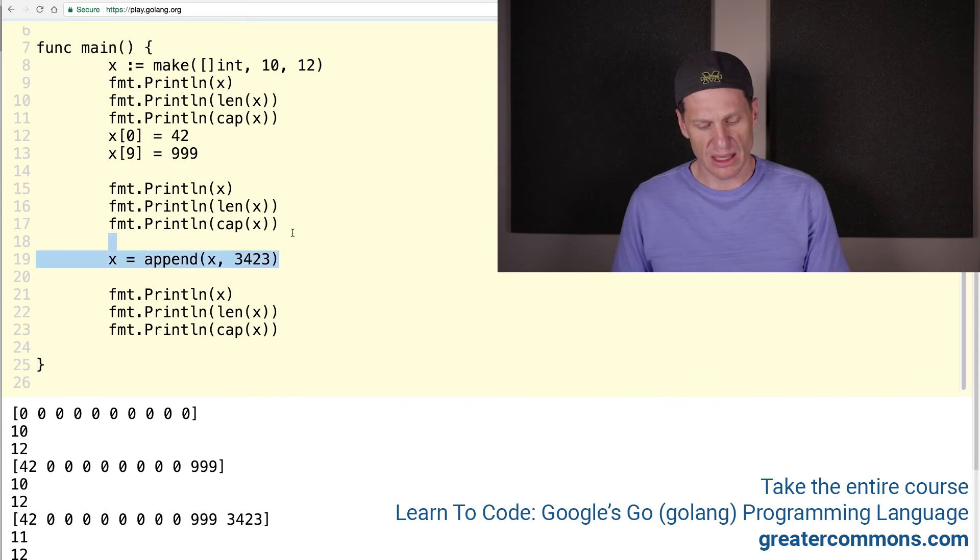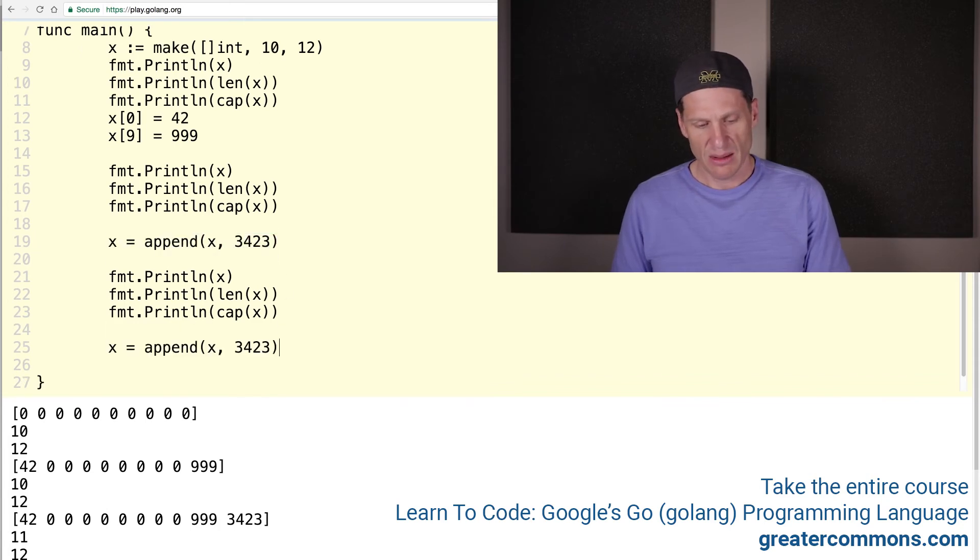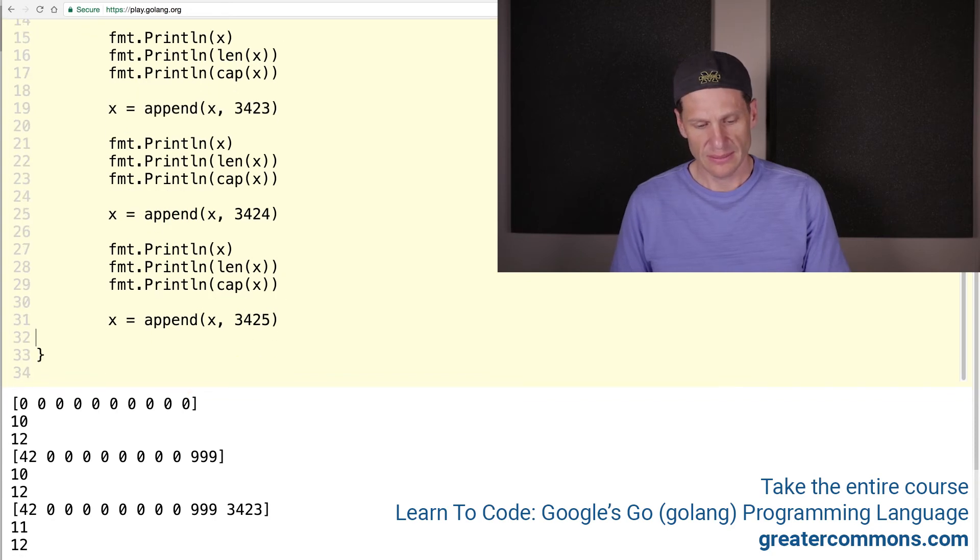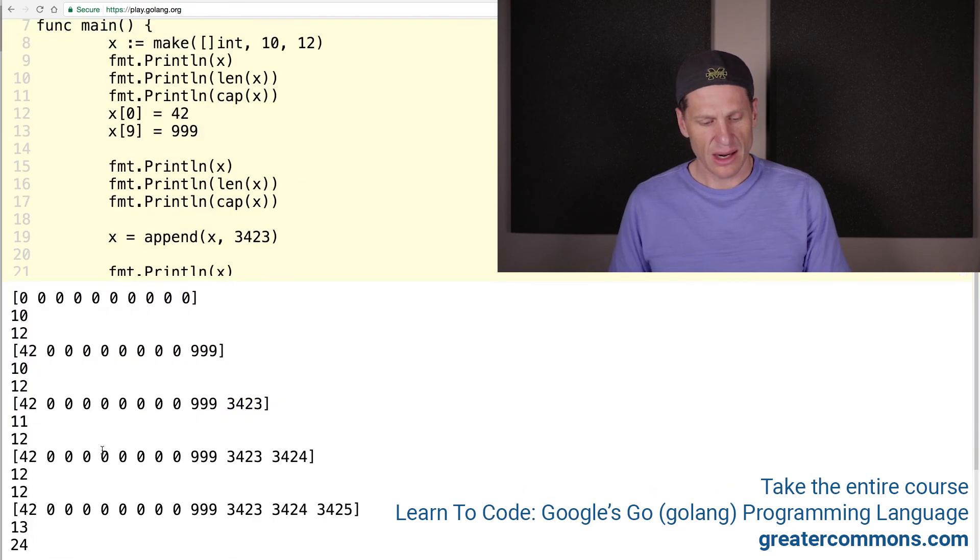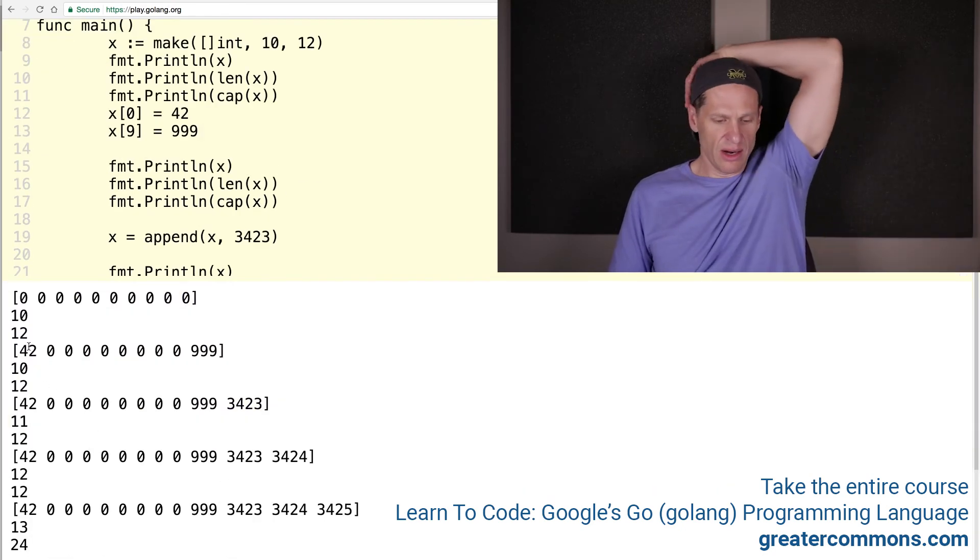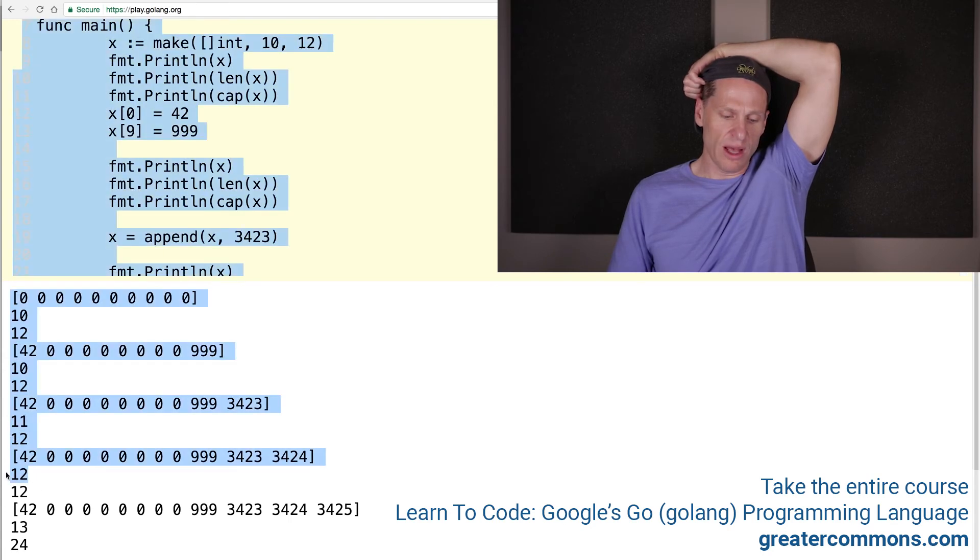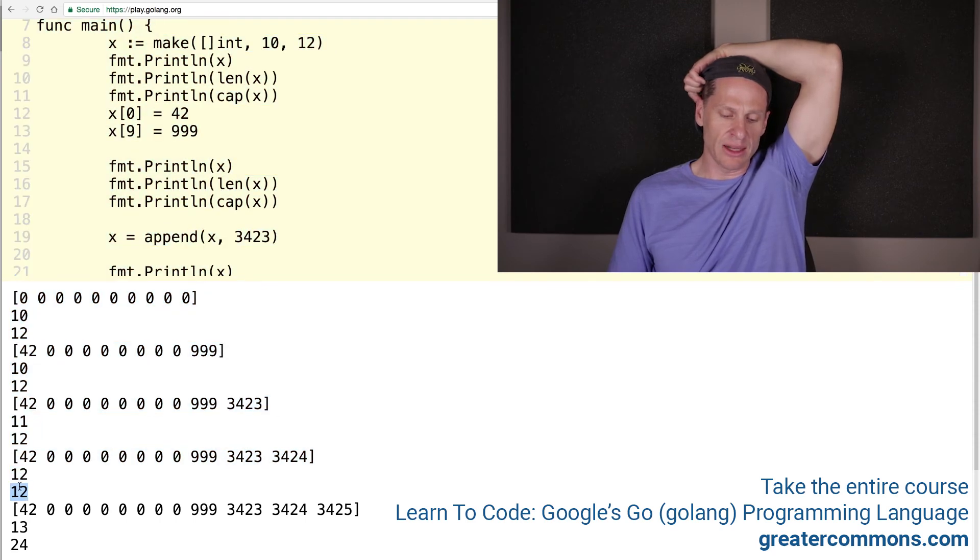Well, what happens now if we append a couple of times? We'll append again and again. And we'll do 324 and 325. And then we'll drop all this between it again. And let's look at what that does. All right. So check it out. Right? Here we started out. Length 10. Cap 12. Underlying array has size 12. Length 10. Underlying array size 12. Length 11. Underlying array size 12. Length 12. Underlying array size 12. So now our slice has filled up all the spots in the underlying array.